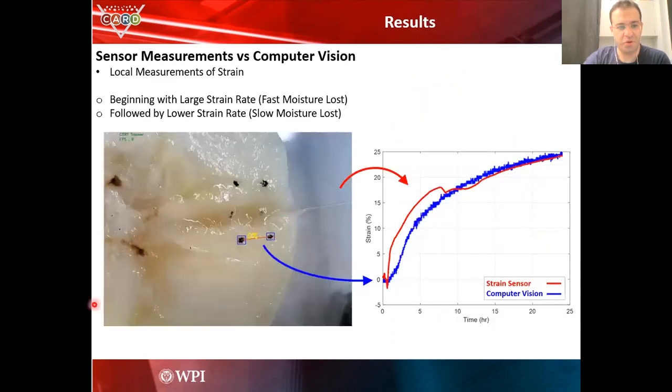Here I'm going to show you a video of our results. You can see here that the sensor is embedded inside the banana. And you can see here the software, the program is tracking the dots on the banana slice. The blue curve here is the measurement from the computer vision, and the red curve is the measurement from our sensor.